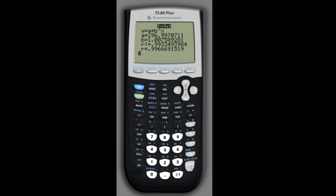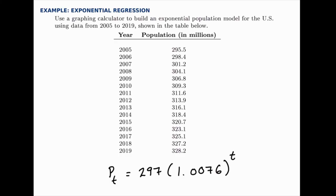we'll write to the power of t. So if we wrote this the way we normally do, it would look like that, 297 times 1.0076 to the t. We could even write it as 297 times 1 plus 0.0076 to the t, if we wanted to emphasize that the growth rate was 0.76%.